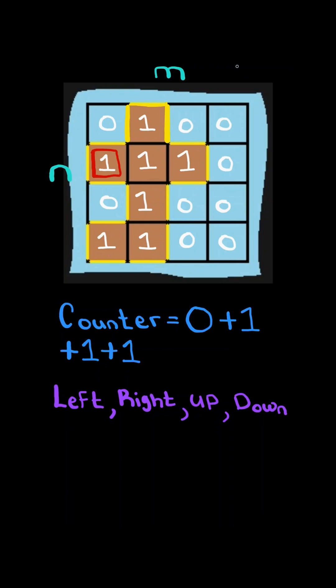And like before, when we come across a one, we need to check all of its directions. If a direction is out of bounds, then there exists a perimeter, so we update our counter.